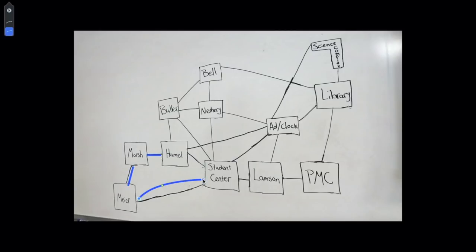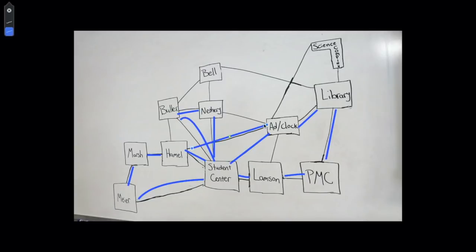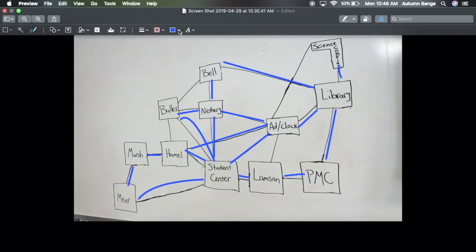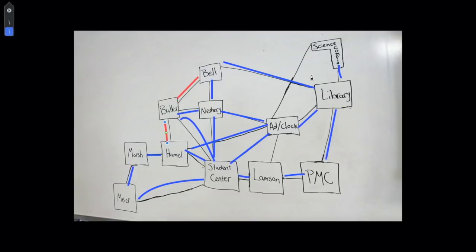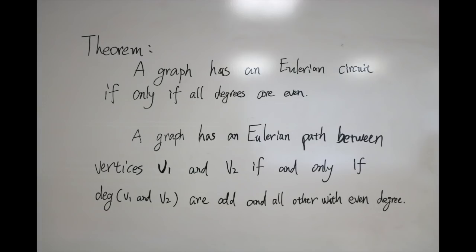Well, we could start by going this way, and then over and around, and make our way around campus, and try to cross each path. But at some point we'll get to the Science Complex, but there's still a bunch of paths that haven't quite been crossed yet. So we can't make an Eulerian path from Hamel to the Science Complex. How do we know for sure? That is where the Eulerian path theorem comes in and helps us figure that out.